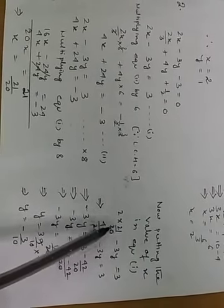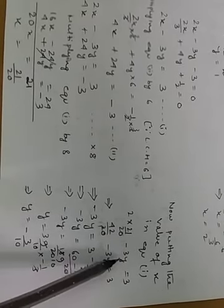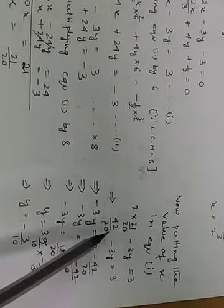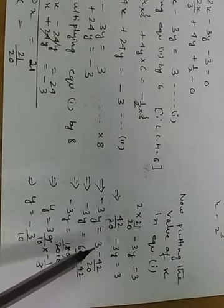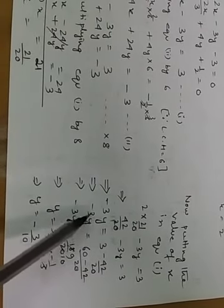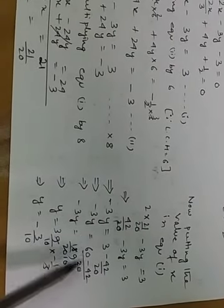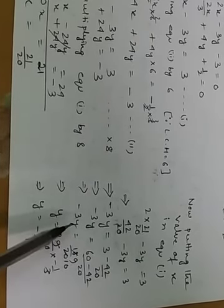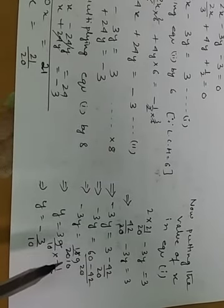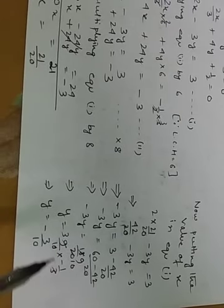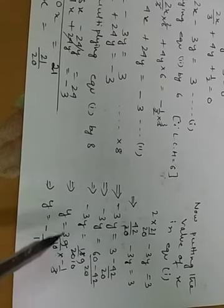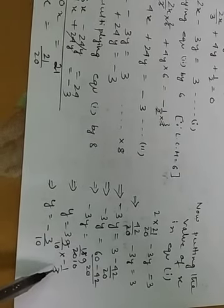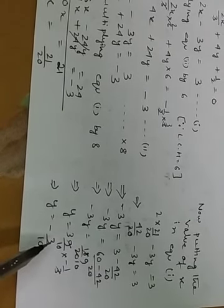So 2 into 21 by 20 minus 3y equal to 3. 42 by 20 minus 3y equal to 3. Minus 3y equal to 3 minus 42 by 20. Minus 3y equal to 60 minus 42 by 20. Minus 3y equal to 18 by 20. If I cancel by 2, I will get 9 by 10. Here y equal to 9 by 10 into minus 1 by 3. So my y is minus 3 by 10.